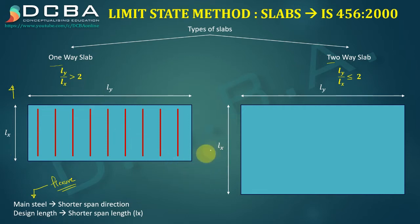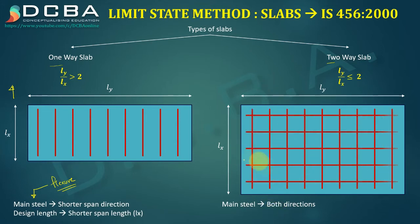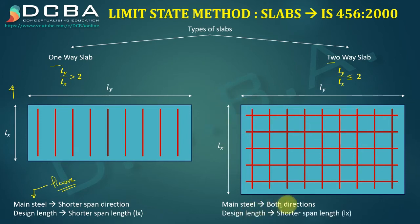Now let us talk about the two-way slab. In a two-way slab, main steel is given in both directions — along the short span as well as along the long span. However, the design length is again considered to be the short span length, which raises the question: why short span in both one-way and two-way slabs?